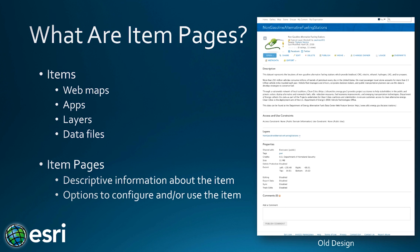Items are all of your ArcGIS Online content and everything cataloged on ArcGIS Online. This includes maps, apps, layers, services, links to services, or files you've stored on your account. So examples would be things like web maps, apps, feature services, or maybe CSV files that you've uploaded.